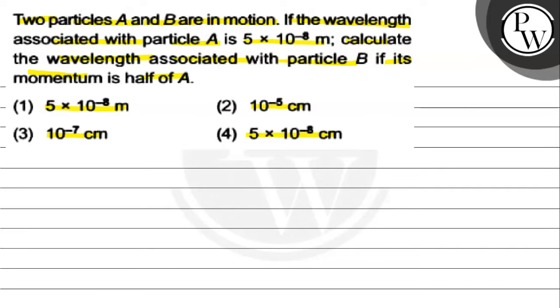So, we need to find what the momentum will be for particle B, and then the wavelength for particle B. If the momentum of particle B is half of A's momentum. First, let's talk about the key concept. And the key concept is,